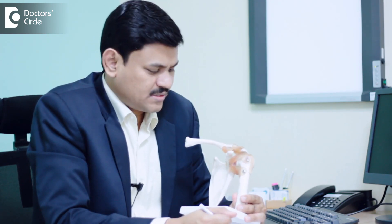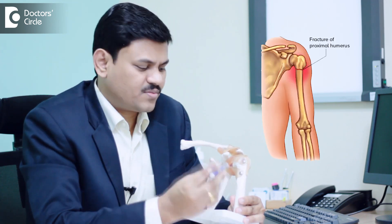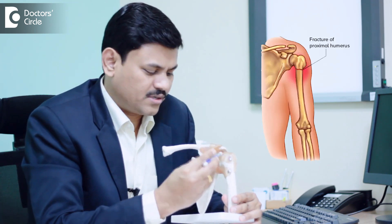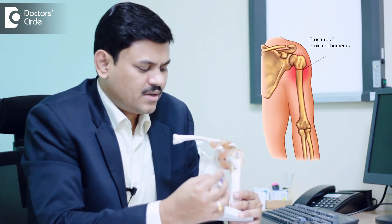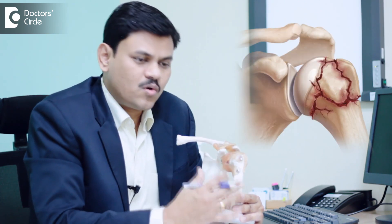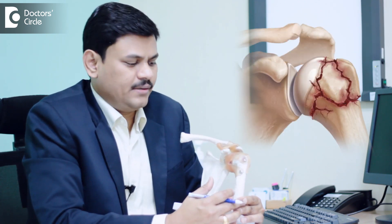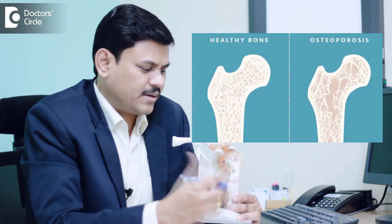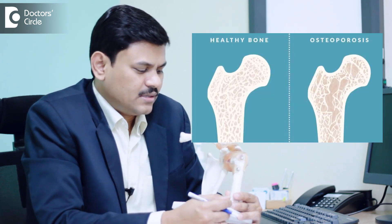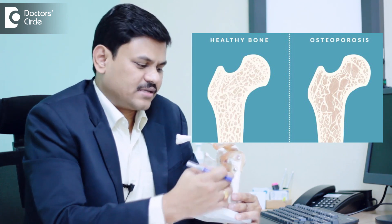The most common fracture around the shoulder joint is fracture of the proximal humerus. It can be broken into a single piece or it can be broken into multiple pieces. It is more common in patients who are aged and the bone is more porotic, where the bone becomes weak. There might be fracture of the greater tuberosity or lesser tuberosity, or it can be fracture of the neck of this bone.